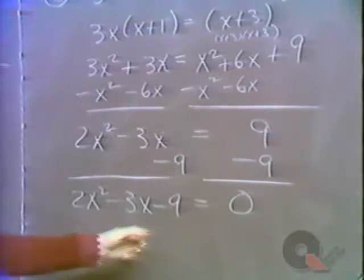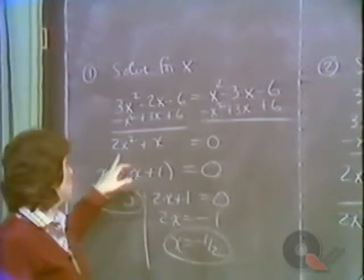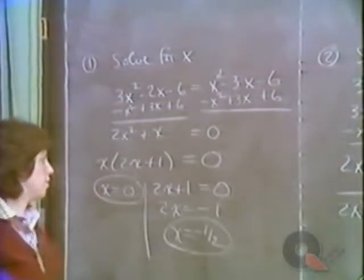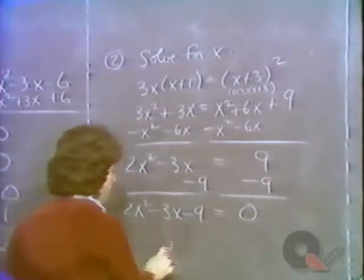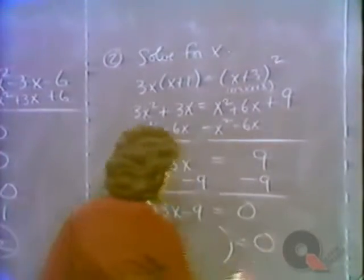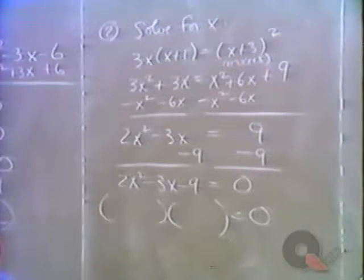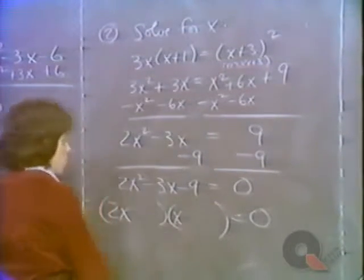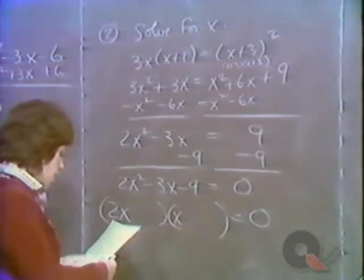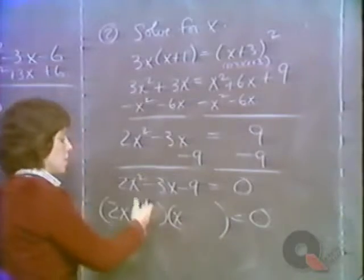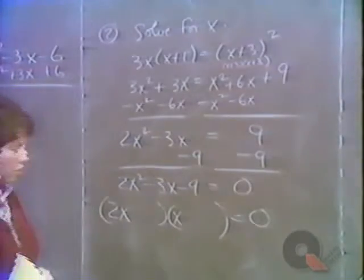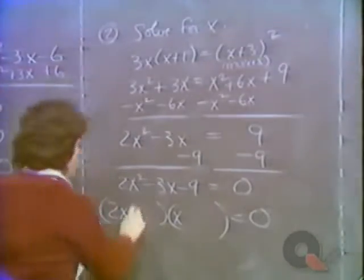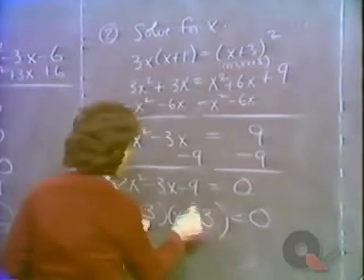This is a little harder than the one before — that one had no constant term, so x was an automatic factor. Here we have no common factor, and we need to write this trinomial as a product of two binomials. We know 2x squared comes from 2x and x. For minus 9, we could have minus 9 and plus 1, plus 9 and minus 1, minus 3 and plus 3, and so on. It turns out that 2x plus 3 times x minus 3 works.